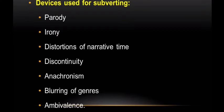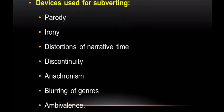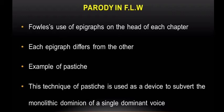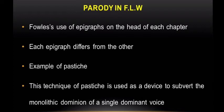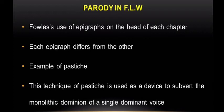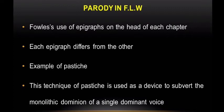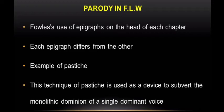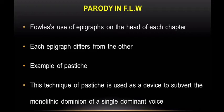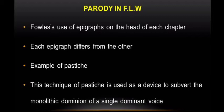All these experimental devices are used by John Fowles in The French Lieutenant's Woman. The clearest example of parody can be seen in Fowles's use of epigraphs — he has added an epigraph at the head of each chapter. Each epigraph differs from the others; some are from Darwin, some from Arnold. These minglings of voices and fusions of Victorian utterances are a brilliant example of pastiche. This technique of pastiche is used by Fowles as a device to subvert the monolithic dominion of a single dominant voice.